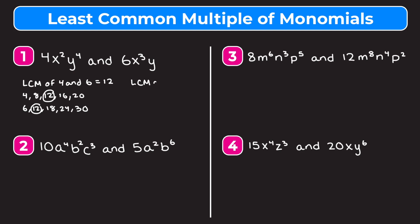Now we need to find the least common multiple of x squared and x to the third. Here's a shortcut: you always take the larger exponent for the variable. Since 3 is larger than 2, the LCM of x squared and x cubed is x cubed. For the y terms, the LCM of y to the fourth and y to the first is y to the fourth. So our overall least common multiple is 12x cubed y to the fourth.